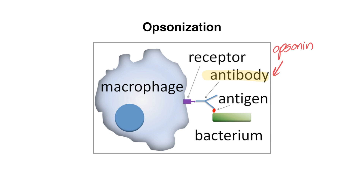When we administer a vaccination like the pneumococcal vaccination, we're basically encouraging an antibody response so that if a person comes in contact with a pathogen like Streptococcus pneumoniae, they already have a mechanism in place to clear that pathogen.